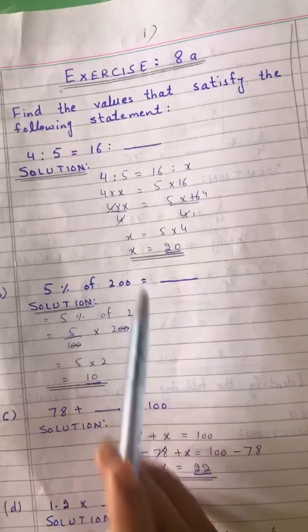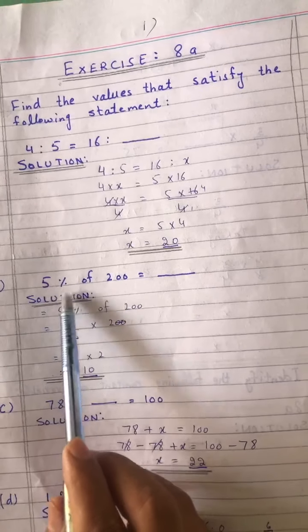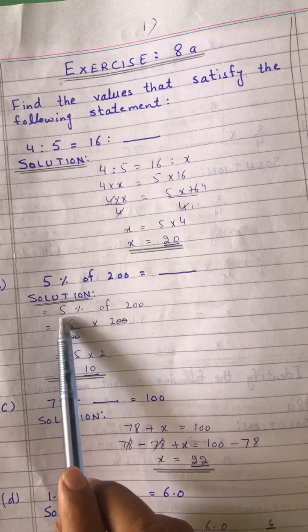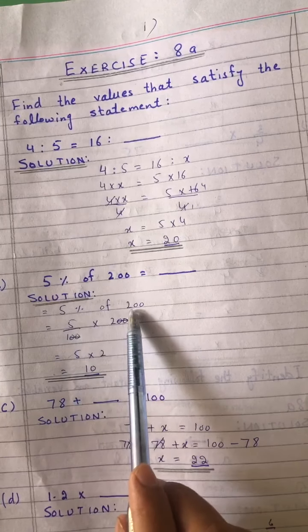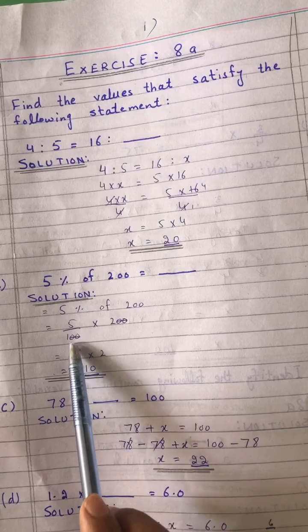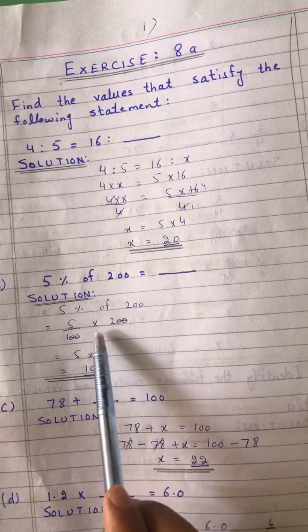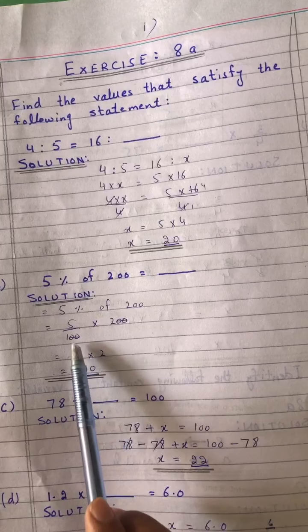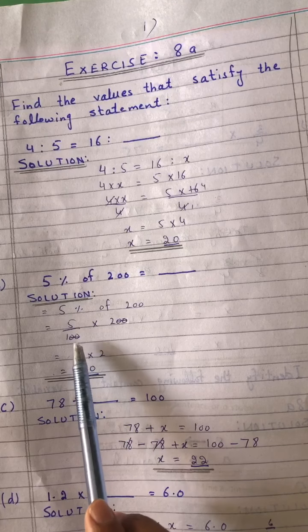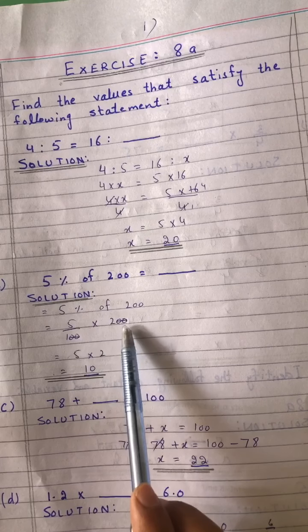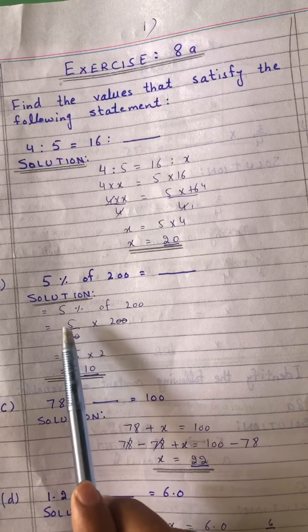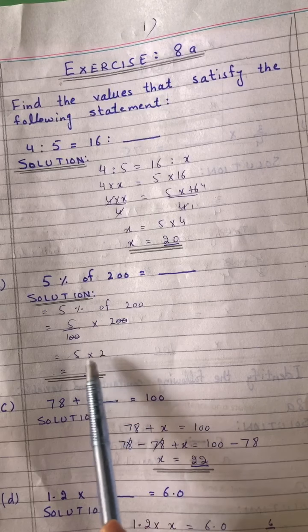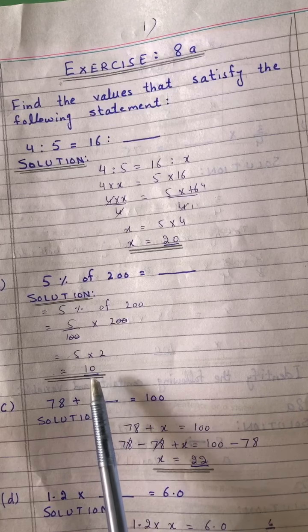Part B: After simplification, we have 5 multiplied by 2, which gives us 10.